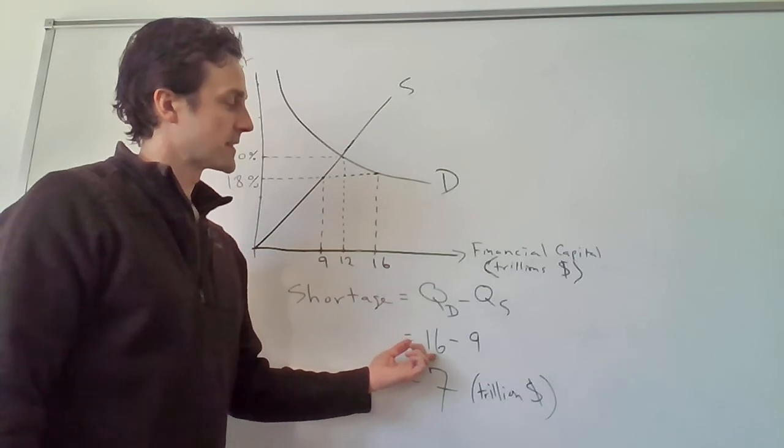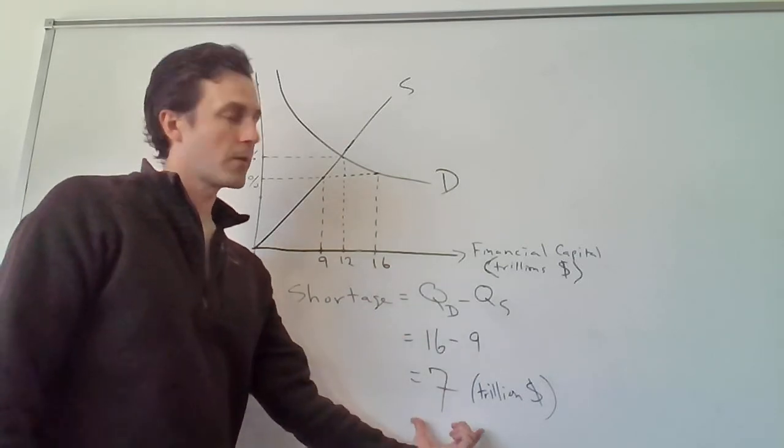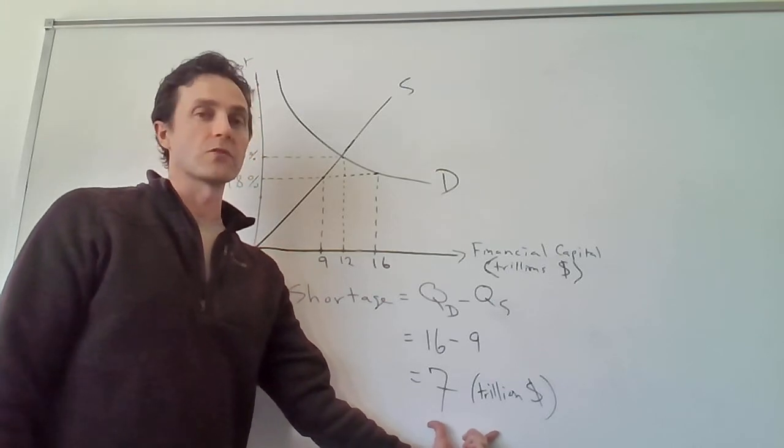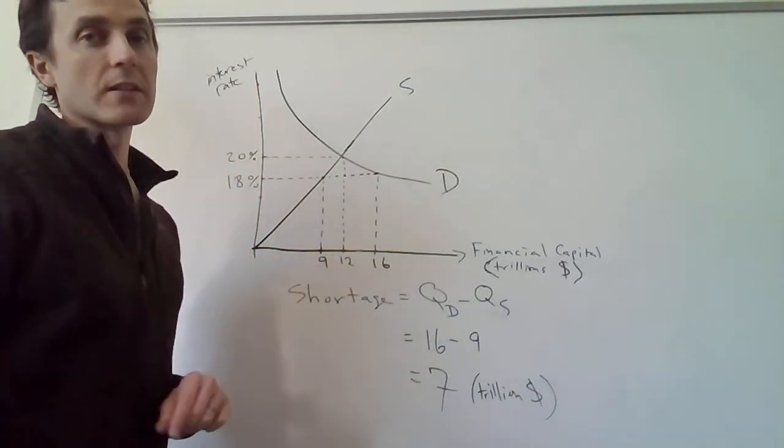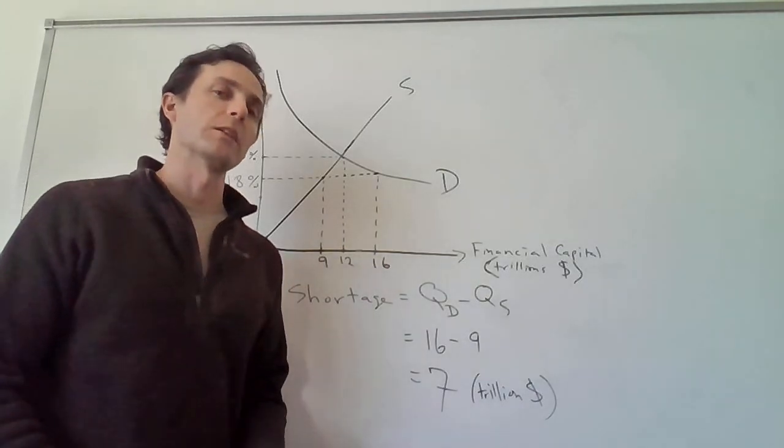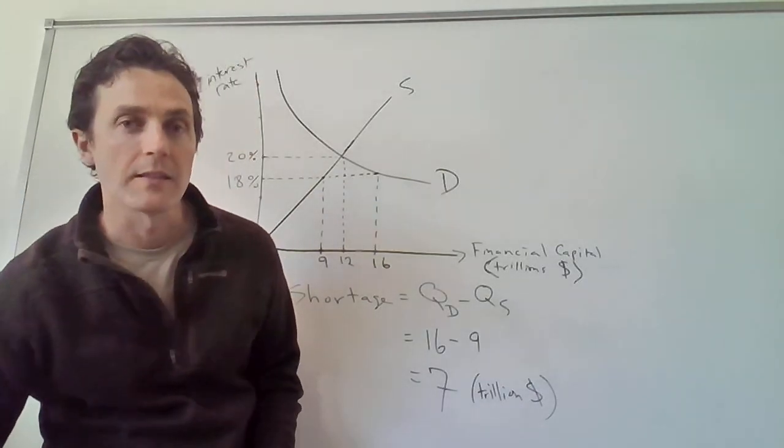So it's going to be $16 minus $9 trillion, which means the size of the credit shortage will be $7 trillion, all because of this usury law that's making interest rates two percentage points below what they would be in equilibrium. All right, thank you for watching.